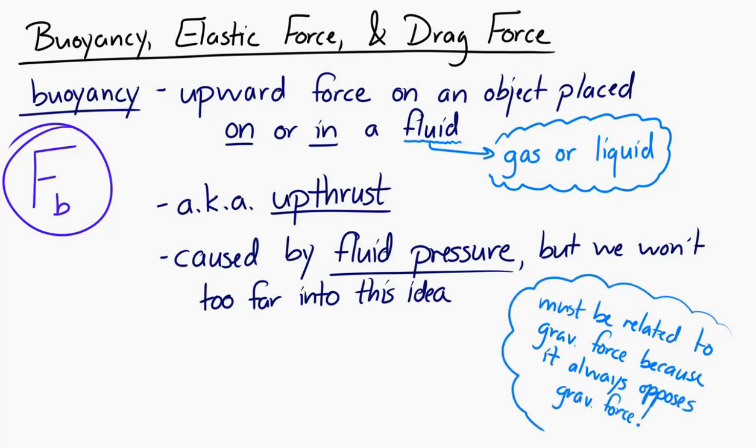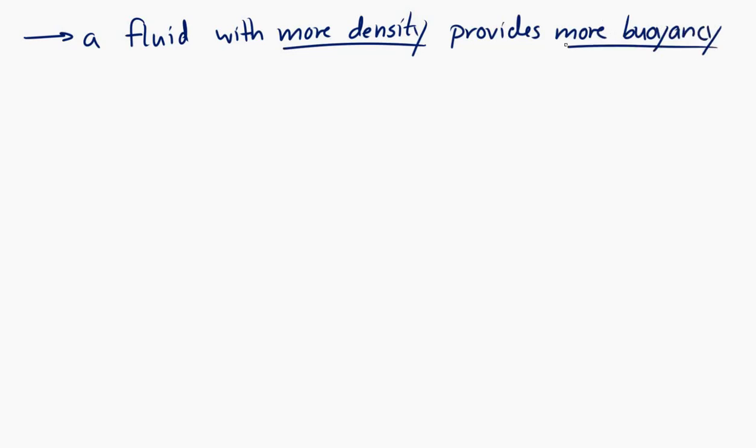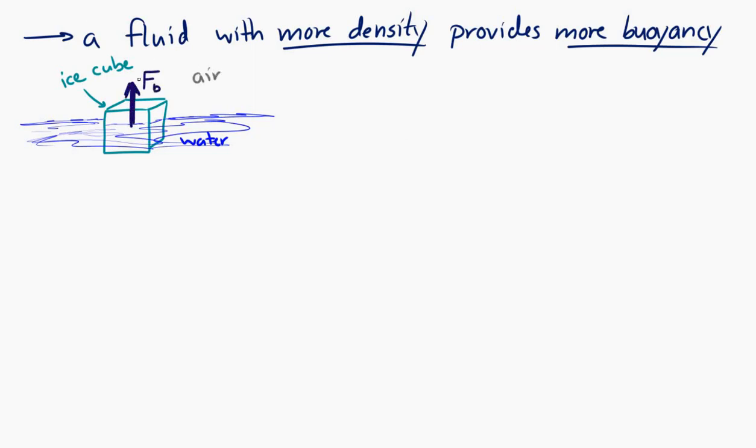But what we can say about buoyancy is that a fluid with more density provides more buoyancy force. And I'm going to draw a little picture here. So imagine that we have an ice cube in water. Here's water, here's air, here's the ice cube. The buoyancy force on the ice cube is in that direction. So you can see it opposes the gravitational force.